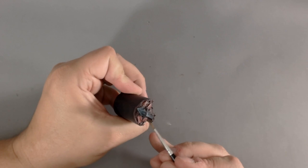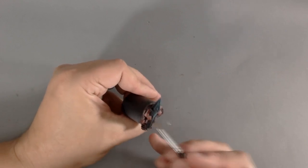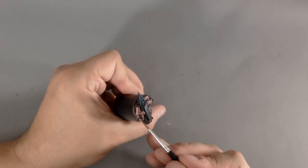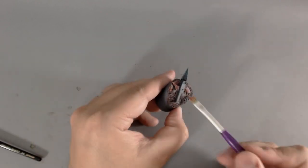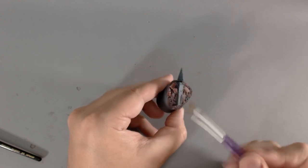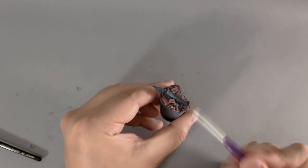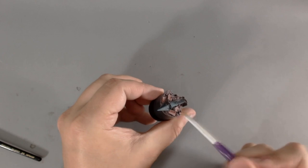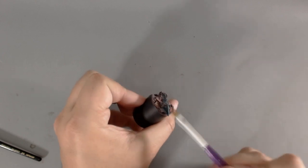And just make them stand down a little bit more. Now using a mix of GW's Rakarth Flesh and Administratum Grey, and do a little dry brush on the mud areas just to add a little definition to those as well.